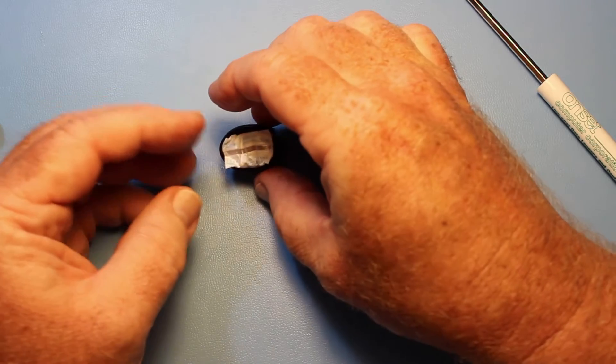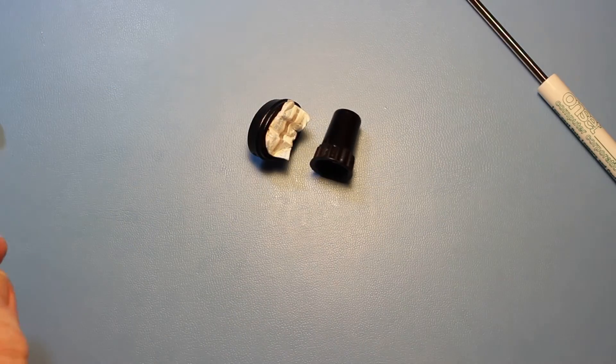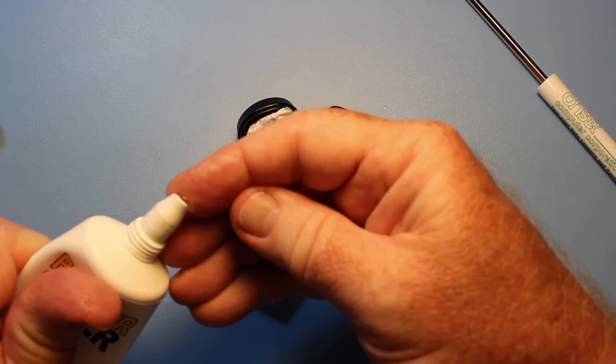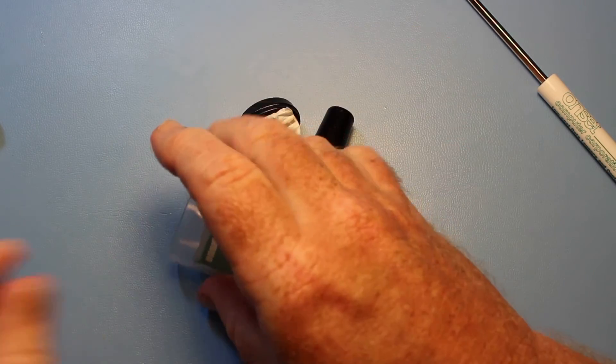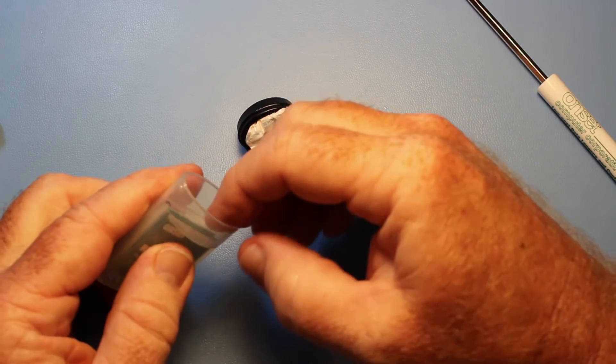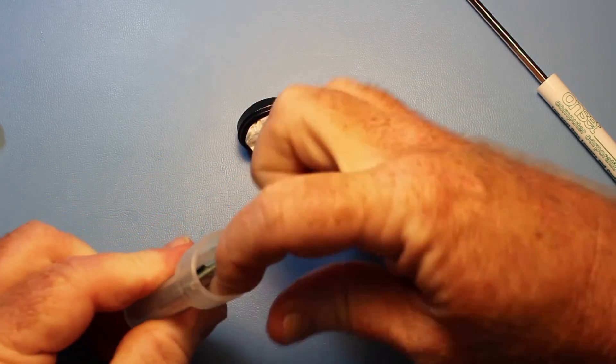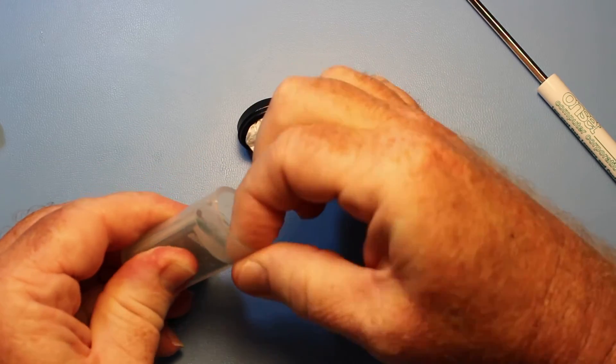The other thing you want to do before you reassemble is put a little bit of O-ring lube around the inside of the pendant case. Again, a very small amount on the end of your finger. You don't want to put too much. Just go around the inside, making sure to get it around the screw holes.